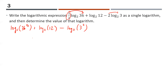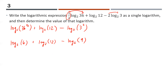Next, evaluate those pieces: 36 to the power of one half is the square root of 36, which is 6, and 3 squared is 9. So we have log base 2 of 6 plus log base 2 of 12 minus log base 2 of 9. Adding the first two logs (same base) means multiplying their inputs: log base 2 of 72 minus log base 2 of 9. Subtracting logs means dividing: 72 divided by 9 gives log base 2 of 8.